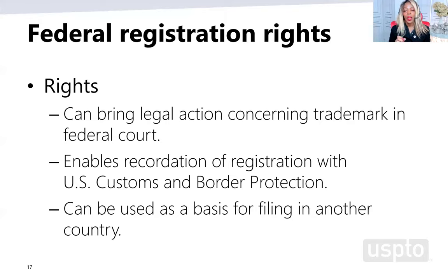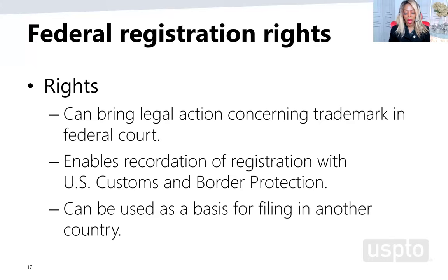Another benefit is that you can use your federal trademark application or registration as a launch point to obtain rights in other countries. Trademark rights are territorial — obtaining federal rights in the United States doesn't mean you have protection in China, Mexico, or France. You would typically have to go to each country to register your mark there. However, the United States has entered into the Madrid Protocol Treaty, under which you can file one application and request an international registration with any of the approximately 130 countries that have signed on. The agency reviewing that international application is the World Intellectual Property Organization.